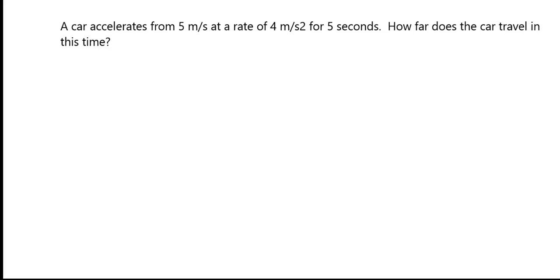As always, we're going to start by writing down our givens. In this case, we know the initial velocity of the car is 5 meters per second. We are told the acceleration is 4 meters per second squared. And we know the time interval that this occurs over is 5 seconds. We are looking for a displacement.